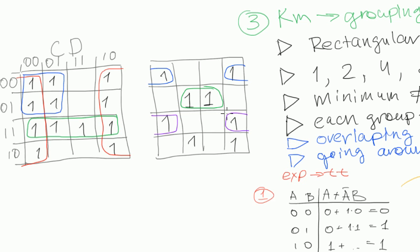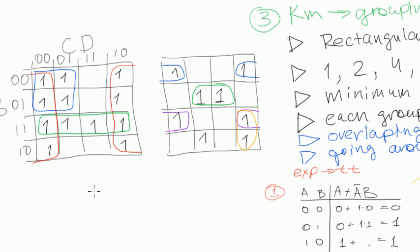Again we see that we can use some going around the boundaries. Then we can group these two. And we have one left. And we cannot actually group it with anything at all. It's just by itself. We will group it with itself. Yeah, that's another example.